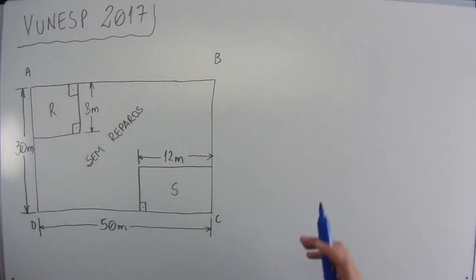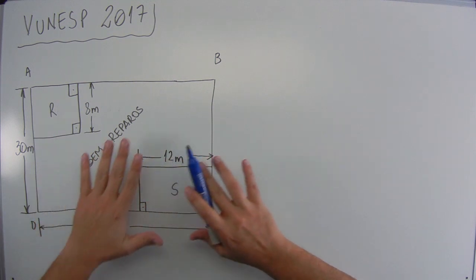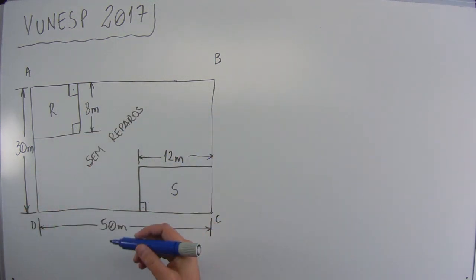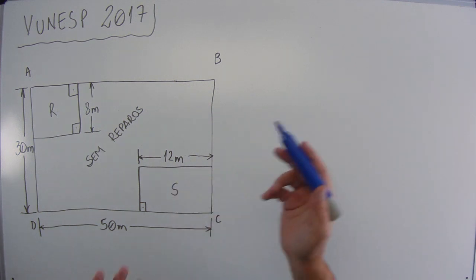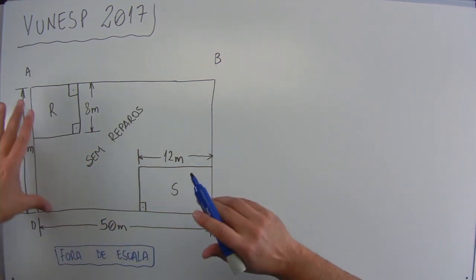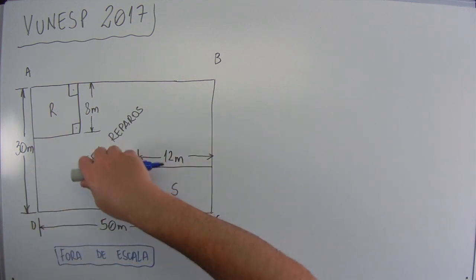E aí, conseguiu resolver essa questão? Essa figura foi desenhada aqui, eu que desenhei, mas eu não me preocupei em fazer a figura em escala, exatamente como tá escrito aí na nossa questão. Então tá escrito assim. Tá escrito fora de escala porque não dá pra gente pegar uma régua e ir medindo os valores aqui e ir comparando.